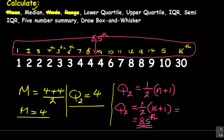So which means the number lies between the 8th and 9th positions — between 4 and 4. When it says 8.5, you look at number 8 and, rounding up, number 9. You go to the 8th number, which is 4, and the 9th number, which is also 4. Remember what you do: you add them and divide by 2. So that's the median when you're using the formula.